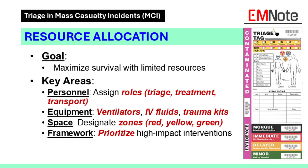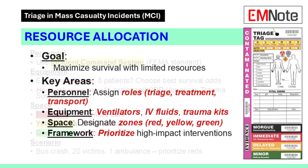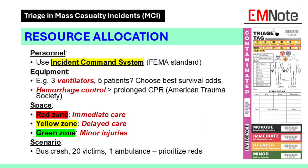Now triage gets patients sorted, but what about resources? In an MCI, you've got limited staff, gear, and space. The principle is: maximize survival. First, personnel — assign roles fast. One team triages, another treats, someone handles transport. The Incident Command System, used by FEMA and hospitals nationwide, is your backbone. Designate a leader, keep it structured. Second, equipment — ventilators, IV fluids, trauma kits — count what you have. Prioritize high-impact interventions. The American Trauma Society says controlling hemorrhage beats prolonged CPR in an MCI.